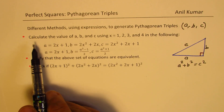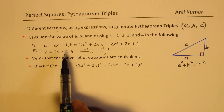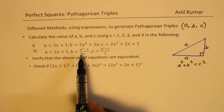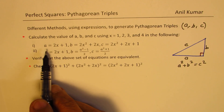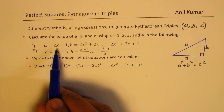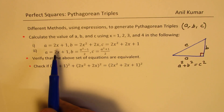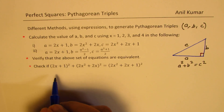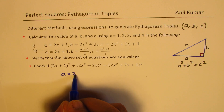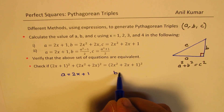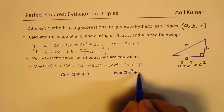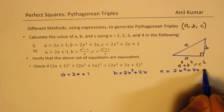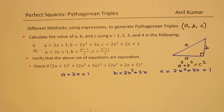In this video we will learn how to calculate the values of a, b, and c. We have two different popular methods, and we'll verify with x equals 1, 2, 3, and 4. The value of a is calculated as 2x + 1, b is equal to 2x² + 2x, and c is equal to 2x² + 2x + 1. So c is one more than b.